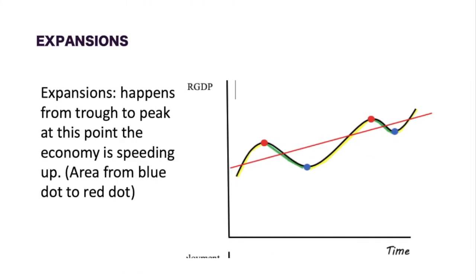If we are in a trough for six months or longer, we consider that a recession, and you would see a big fall in output, income, and employment levels. Expansionary policy, or expansion, is from the trough to the peak — from the blue point to the red point. At this point the economy is speeding up, and either the government or the Federal Reserve is applying the gas to move the economy in the right direction.